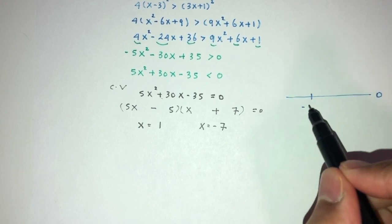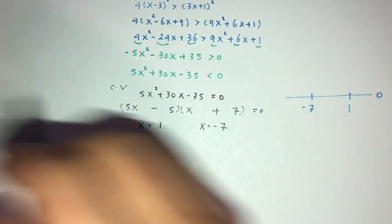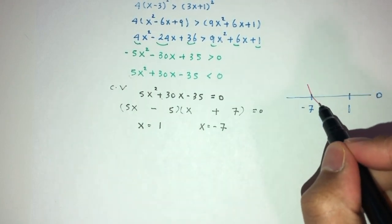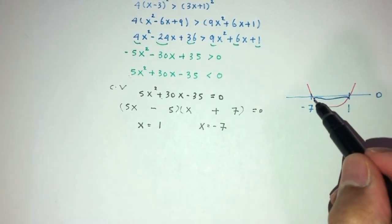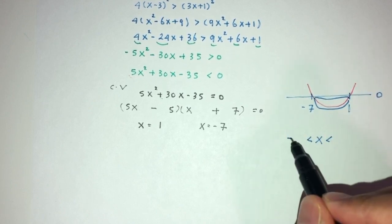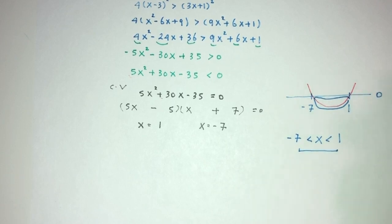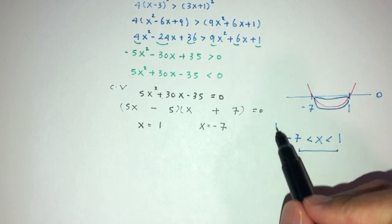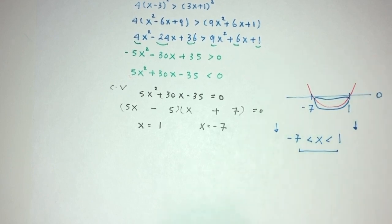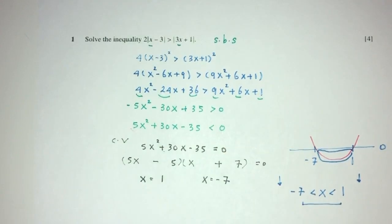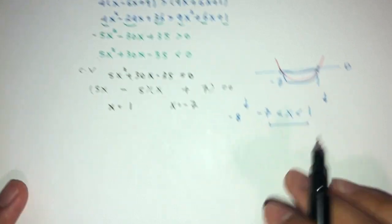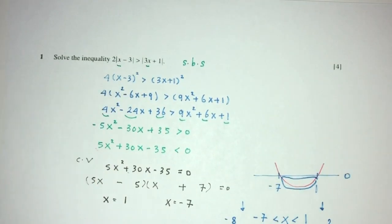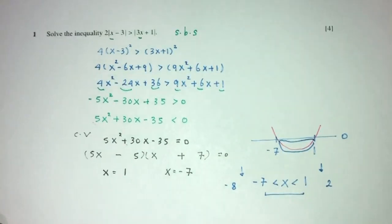On the number line, minus 7 comes before 1. Since the coefficient of x squared is positive, the parabola has a minimum shape. The question asks for where the expression is below zero, which is between the two roots, so x must be between minus 7 and 1. Always double-check by substituting a value from inside — say minus 8 — and one from outside — say 2 — to verify.